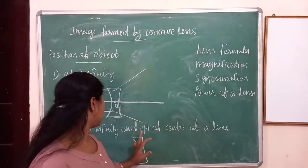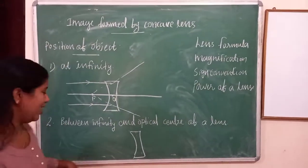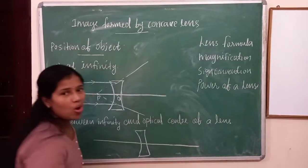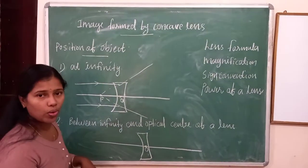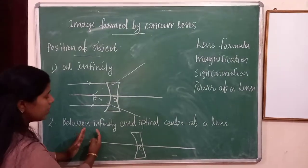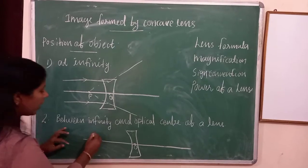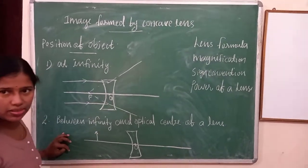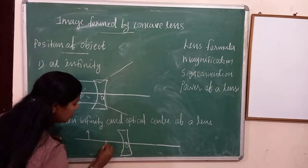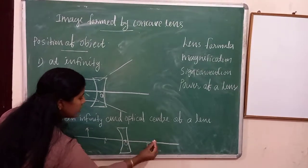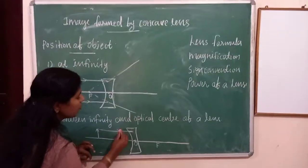Second case: object between infinity and the optical center of the lens. How to draw the diagram? First we draw one concave lens, then a line through the center — that is the optical axis, the principal axis. Here is the optical center. The object is between infinity and the optical center. This is one object. This is a ray of light parallel to the principal axis — parallel to the principal axis up to here, straight.